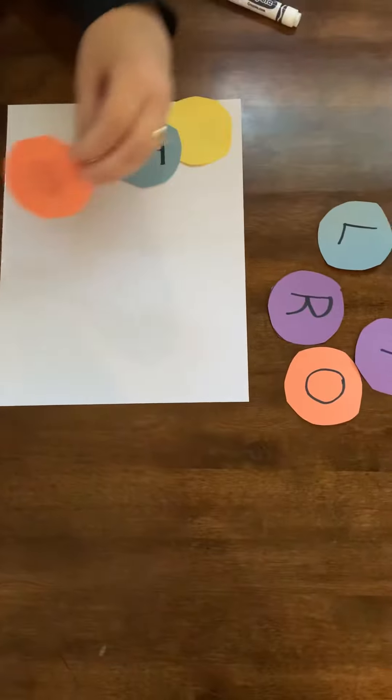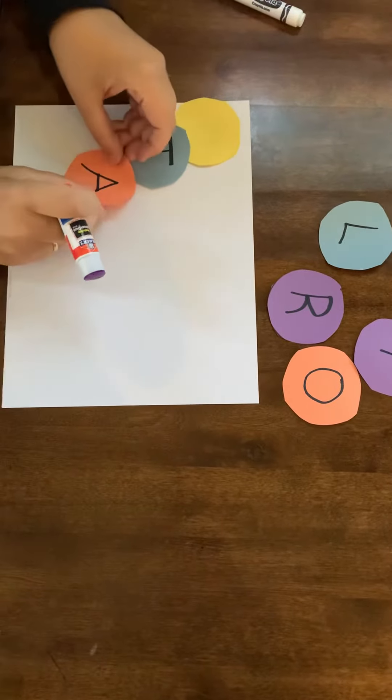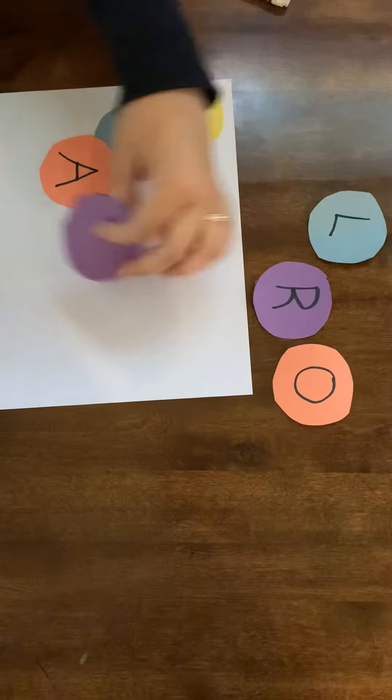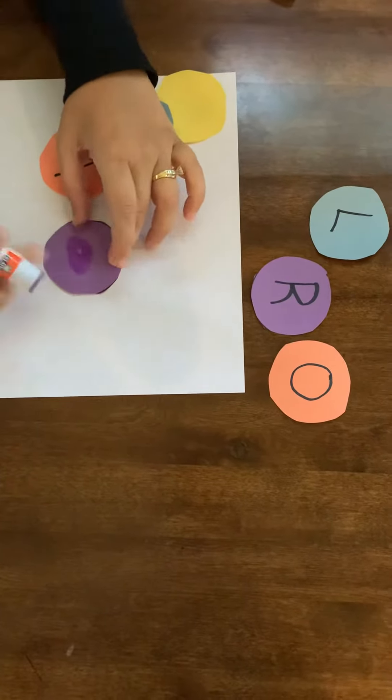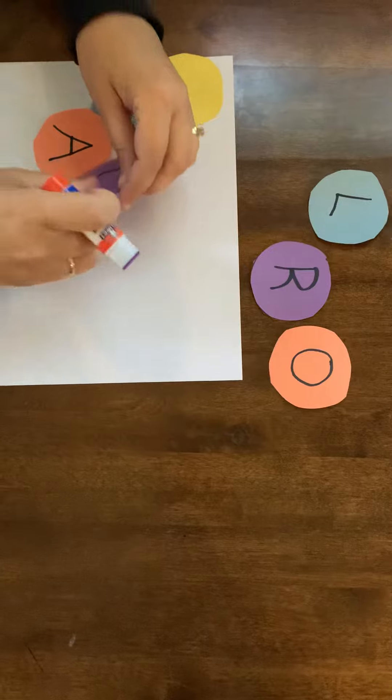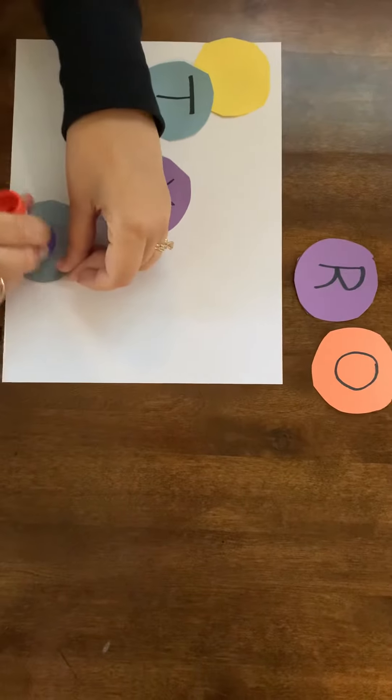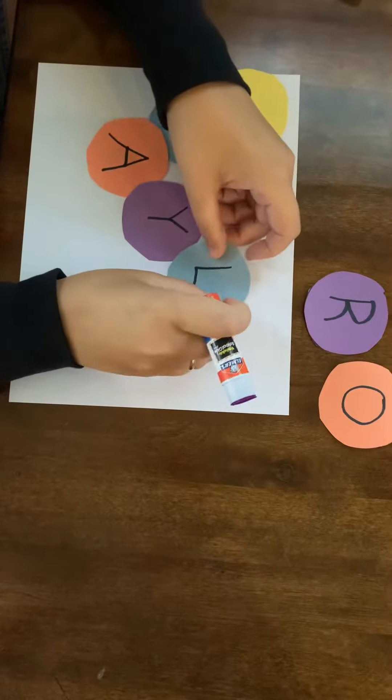Then we'd find the A. Make sure they pat, pat, pat it. Circular motion. We'd do that for all the letters of her name, allowing her to use the circular motion. Patting it down.